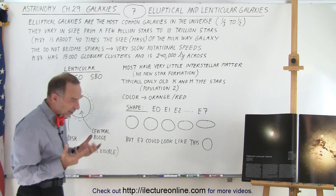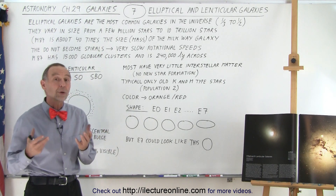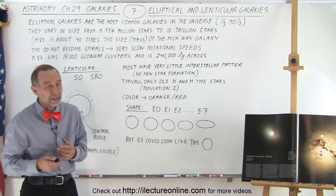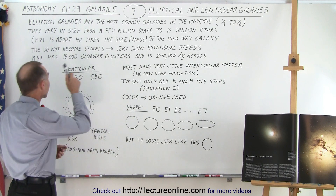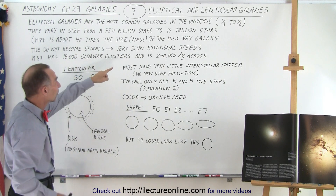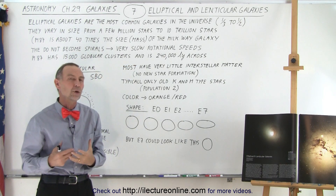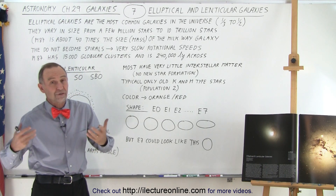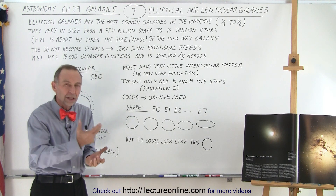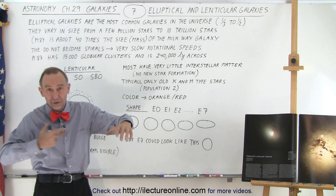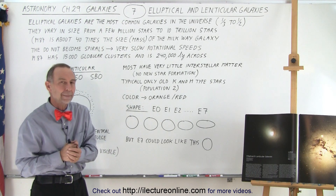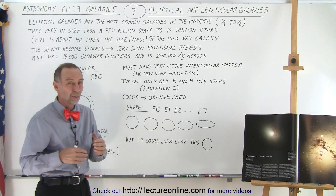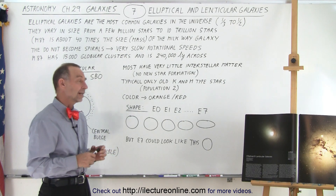One thing that's always being asked is: do elliptical galaxies become spirals, or do spiral galaxies become ellipticals? The answer is no. Especially in the direction from elliptical to spiral — elliptical galaxies rotate very, very slowly, while spiral galaxies rotate relatively fast, and because of the conservation of angular momentum, you couldn't have a galaxy that is rotating very slowly somehow begin to rotate faster. So they're definitely very distinct galaxies — one doesn't become the other. Once an elliptical galaxy, always an elliptical galaxy.